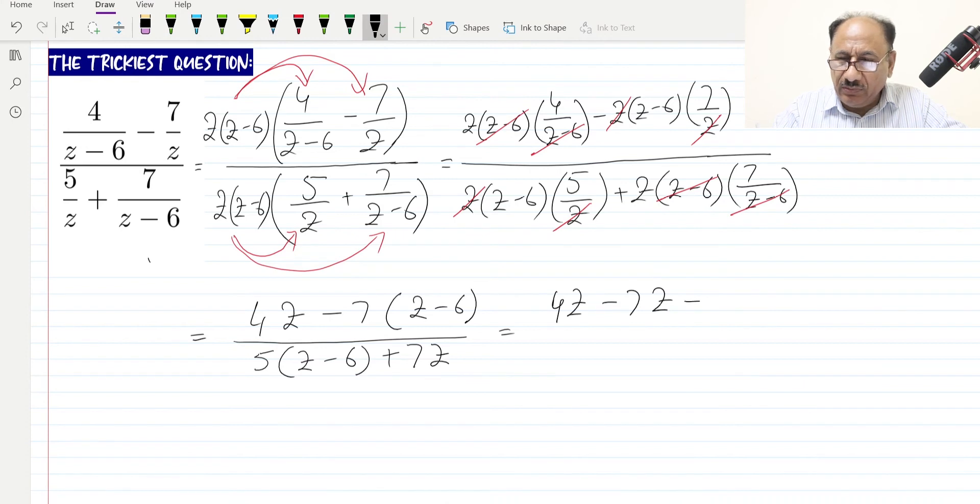This will be divided by 5z minus 30 plus 7z. After adding like terms, this will be minus 3z plus 42, divided by 12z minus 30.